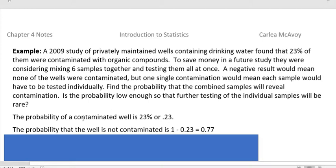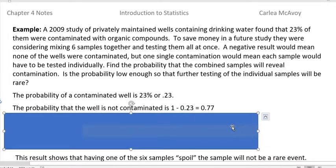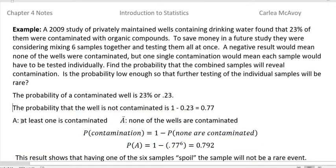So the probability of a contaminated well is 23 percent or 0.23. So the probability that the well is not contaminated is 1 minus 0.23 or 0.77. So we have A is at least one is contaminated. And the complement of that is none of the wells are contaminated. So what we're going to do is figure out the probability that one of those is contaminated by taking 1 minus none being contaminated.